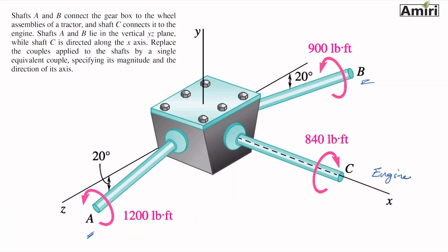Shaft A and B lie in the vertical XY plane, while shaft C is directed along the x-axis. So this is just 840i pound-foot. Each of these has a j component and a k component, no i component. Replace the couples applied to the shafts by a single equivalent couple, specifying its magnitude and direction of the axis. So get rid of these three and replace it by one couple.